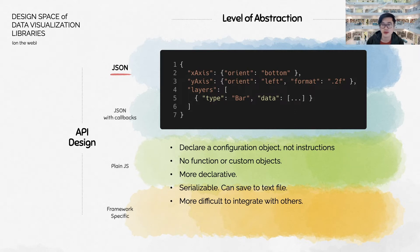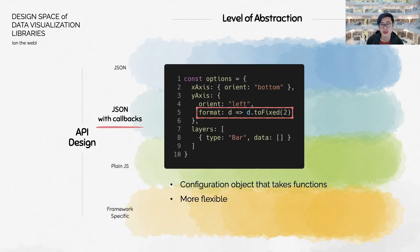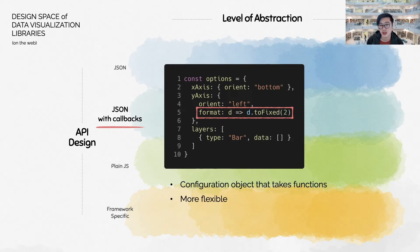In return, it is more difficult to integrate with other libraries. Some libraries such as eCharts offer the hybrid JSON with callbacks approach. Instead of plain JSON, a single configuration JavaScript object is used. It can accept lambda functions, such as the format function you're seeing here on the screen, and sometimes non-primitive values. This leads to more flexibility and possible integration with other libraries through these functions, traded with the serializable text output and strict enforcement of a fully declarative API. When the extra features are not used, they look just like JSON.